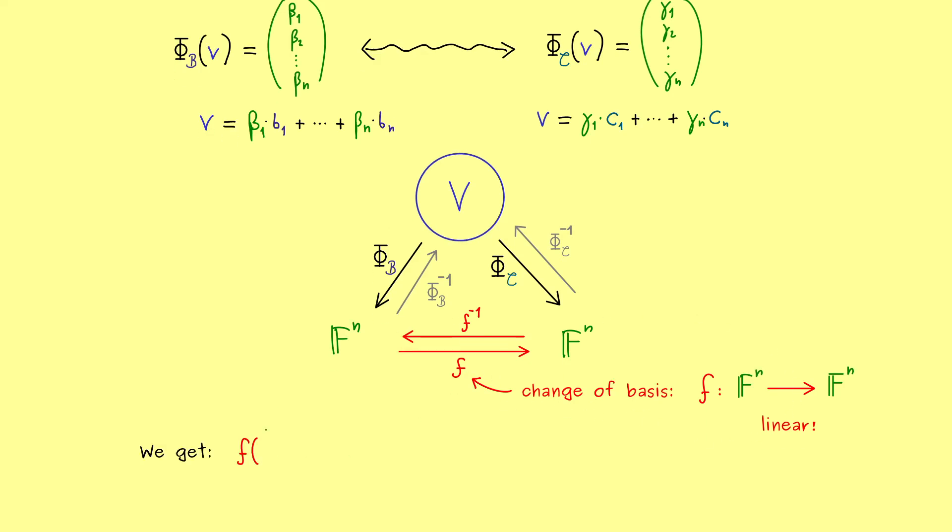And there we already know the inverse of f is also a linear map. Ok and now we can just write down how the map is defined. So we take an x from the domain and this x is first put into the map φ_B inverse.